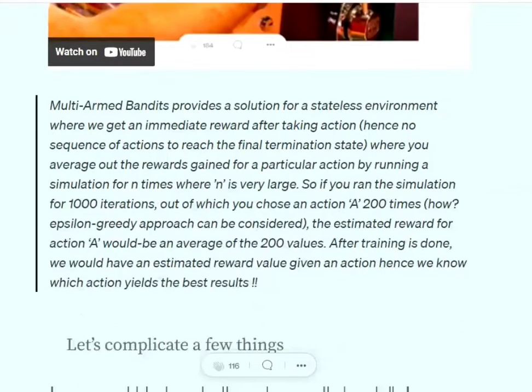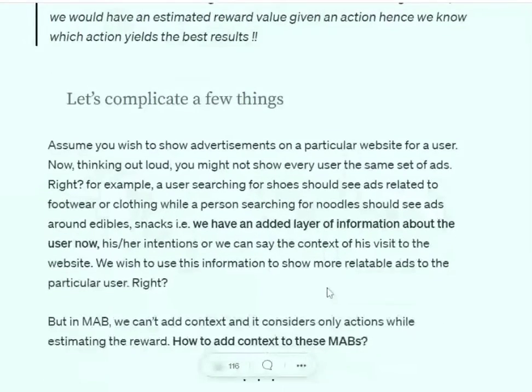Consider a small example from an e-commerce website. Users are coming from different perspectives. Someone wants to buy a diaper, someone wants to buy a shoe, someone wants to buy chips. They have different contexts. In that case, showing them the same action won't make sense.